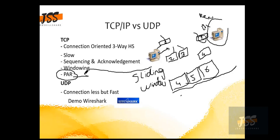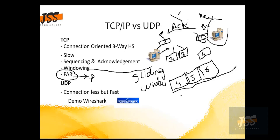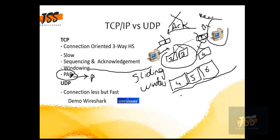The other concept is known as PAR — Positive Acknowledgement with Retransmission. What if the acknowledgement fails? Acknowledgement is sent to make sure the sender knows the packet has been received. But what if the acknowledgement fails? PAR is the concept that handles this: the sender will wait for some milliseconds or seconds, and if it does not receive the acknowledgement, it is going to retransmit those old packets again.